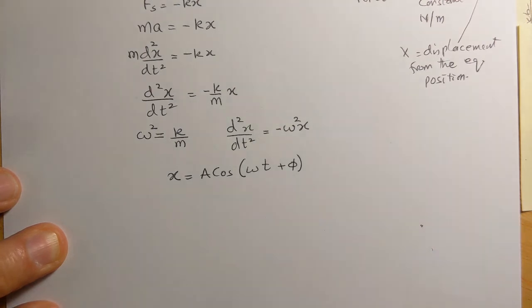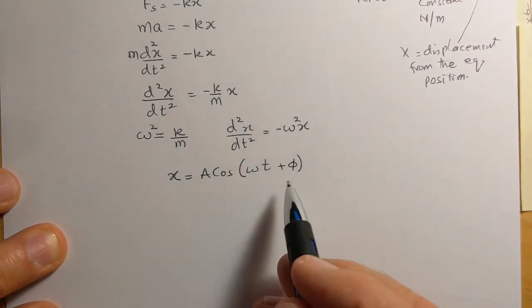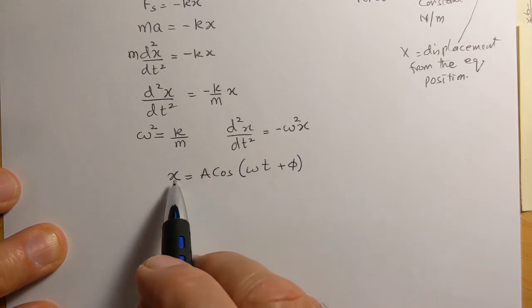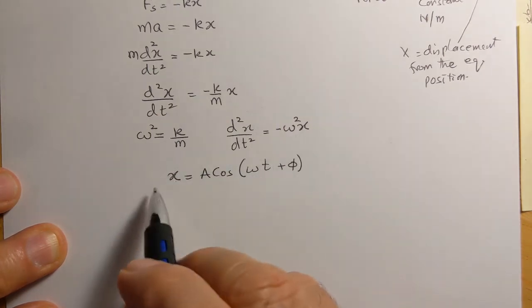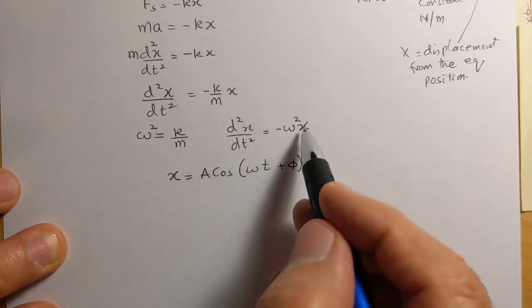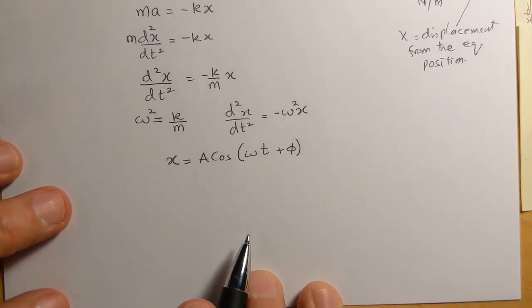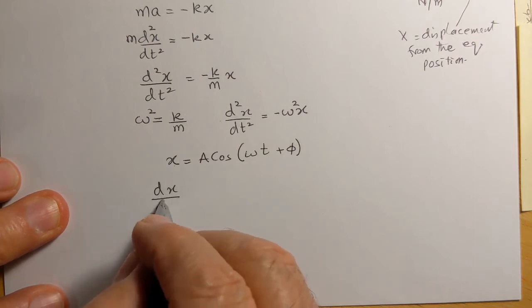a constant term here. Now to make sure that this is a correct solution, we will substitute this value of x and put the second derivative of x, and we'll see if the left-hand side is equal to the right-hand side. So to do that, we first take the first derivative